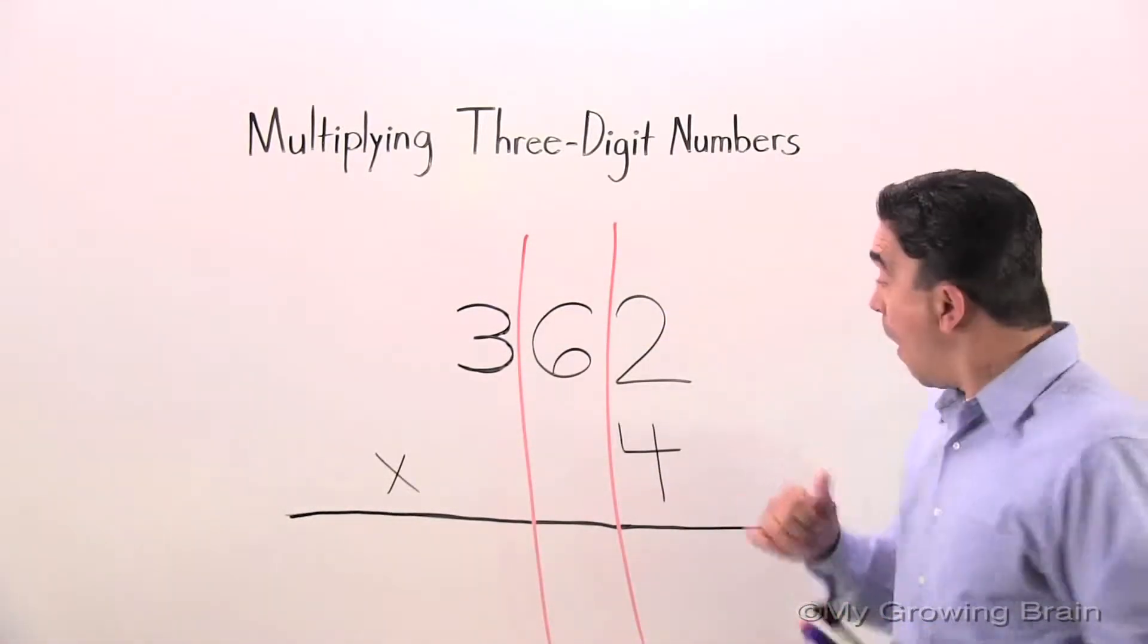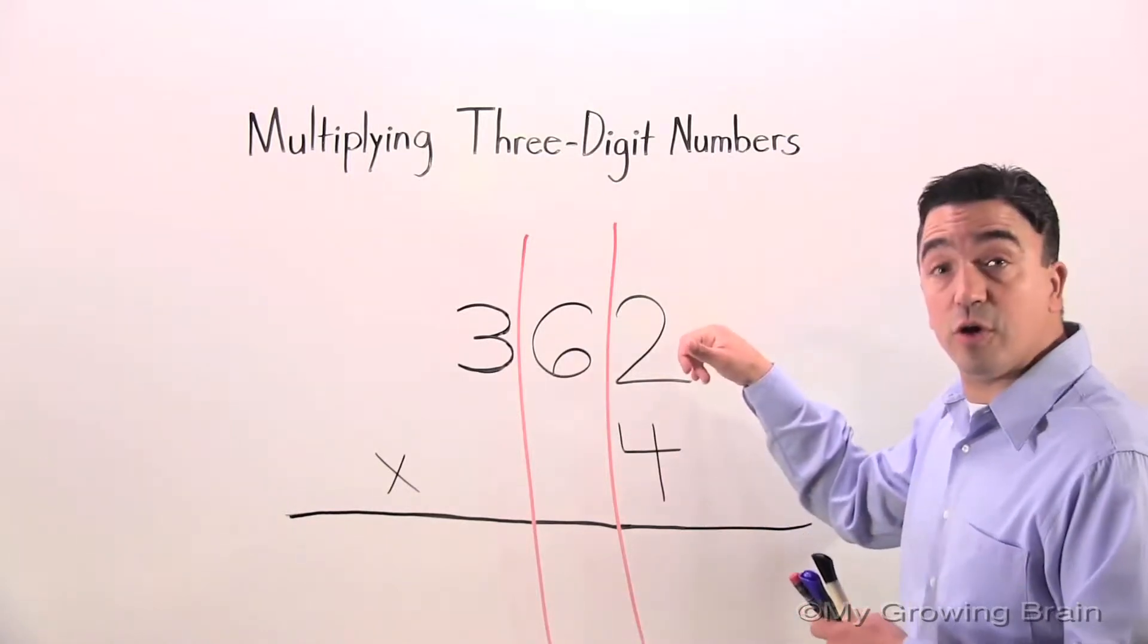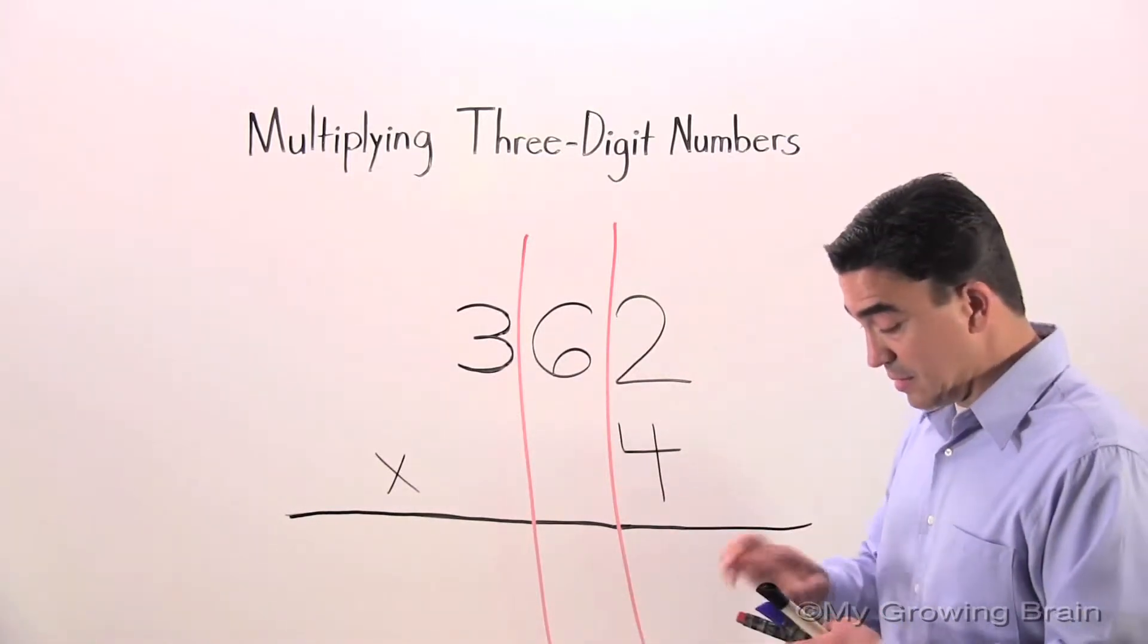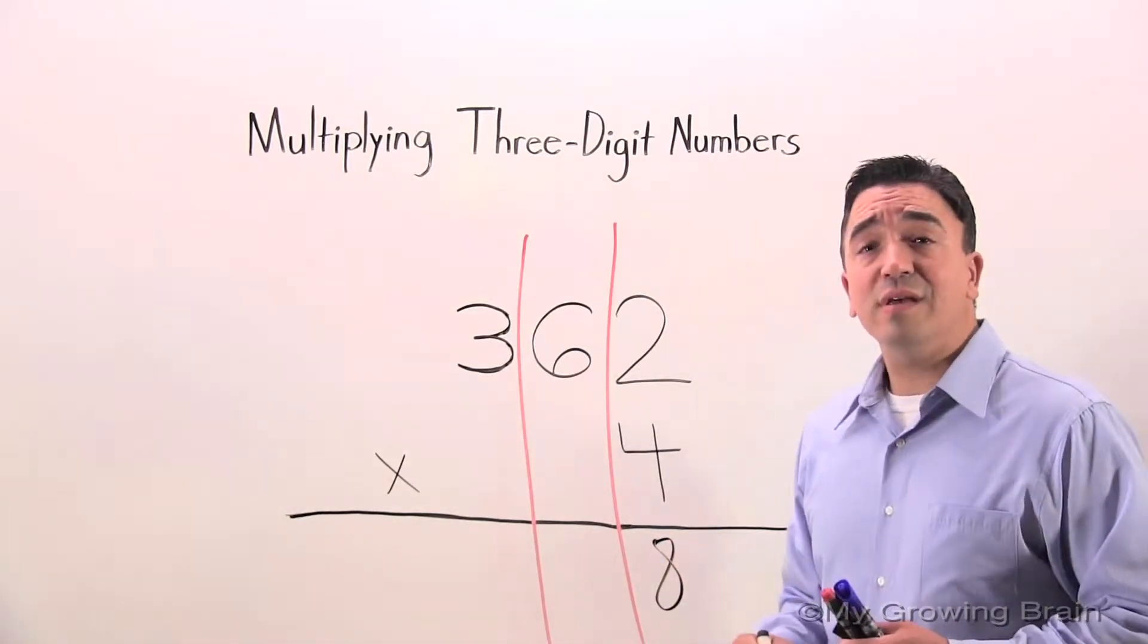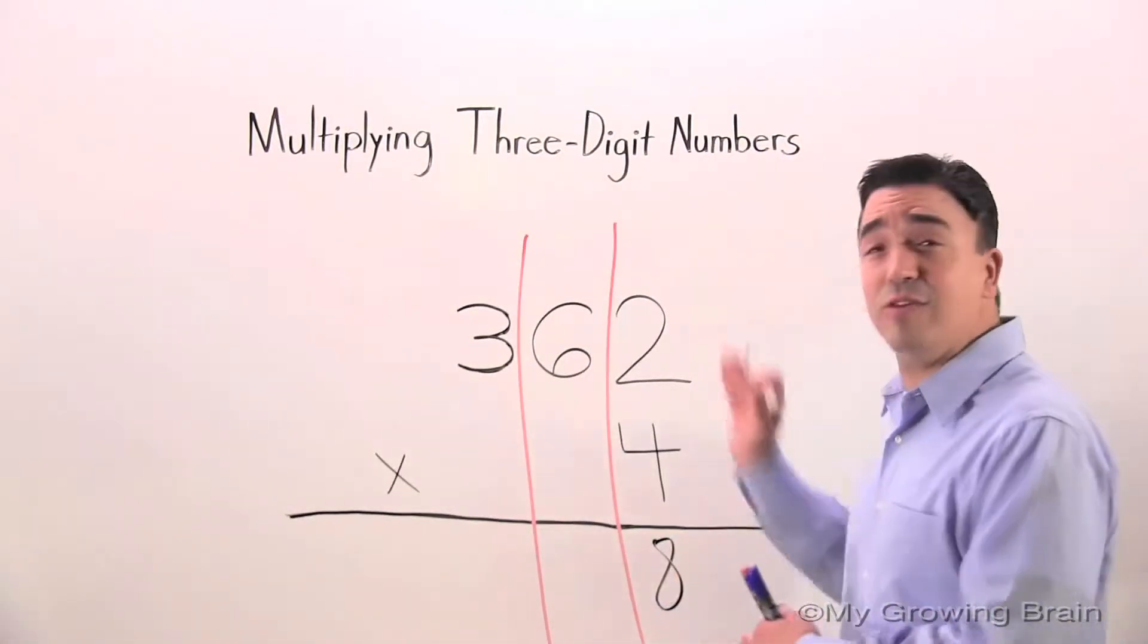I'm going to start at the bottom. Four times two is eight, so I'm going to go ahead and write it. Now, you notice that that was a single digit. Therefore, I don't need to regroup that.